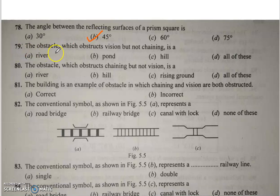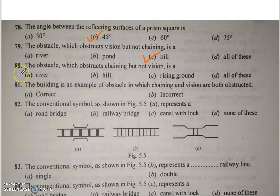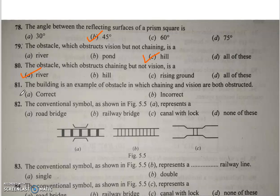Q79: The obstacle which obstructs vision but not chaining is a hill. Q80: The obstacle which obstructs chaining but not vision is a river. Q81: A building is an example of an obstacle in which both chaining and vision are obstructed — answer is correct.